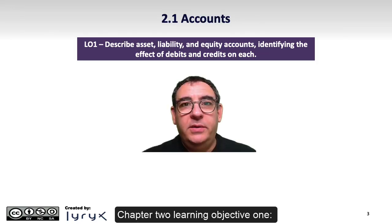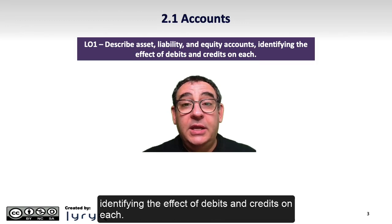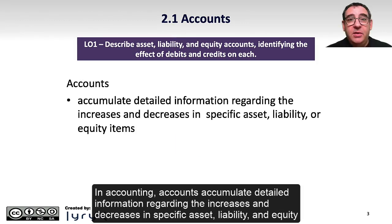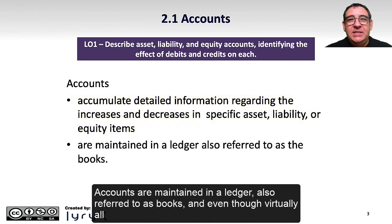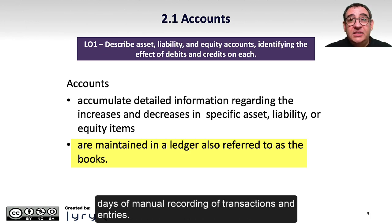Chapter 2 Learning Objective 1: Describe asset, liability, and equity accounts, and identify the effect of debits and credits on each. In accounting, accounts accumulate detailed information regarding the increases and decreases in specific asset, liability, and equity items. Accounts are maintained in a ledger, also referred to as books. Even though virtually all accounting systems are computerized today, the term 'books' carries over from the days of manual recording of transactions and entries.